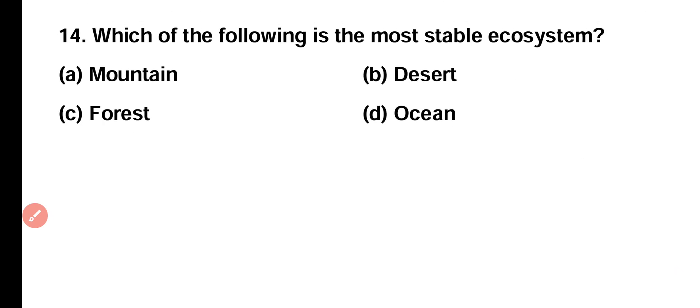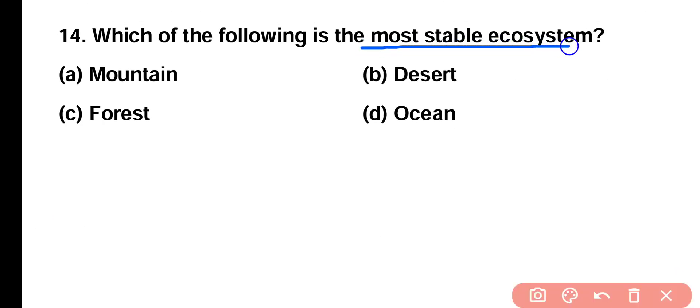Question number fourteen: which of the following is the most stable ecosystem? Mountains, desert, forest, or ocean? Correct answer is option D. Oceans are the most stable ecosystem in the world.